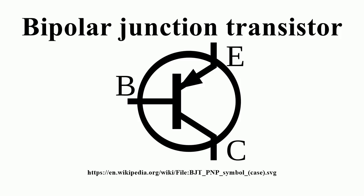The bipolar junction transistor, unlike other transistors, is usually not a symmetrical device. This means that interchanging the collector and the emitter makes the transistor leave the forward active mode and start to operate in reverse mode, because the transistor's internal structure is usually optimized for forward mode operation. Interchanging the collector and the emitter makes the values of alpha and beta in reverse operation much smaller than those in forward operation. Often the alpha of the reverse mode is lower than 0.5. The lack of symmetry is primarily due to the doping ratios of the emitter and the collector. The emitter is heavily doped, while the collector is lightly doped, allowing a large reverse bias voltage to be applied before the collector-base junction breaks down.